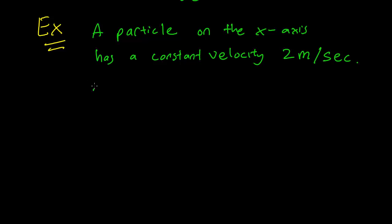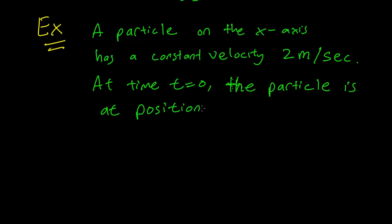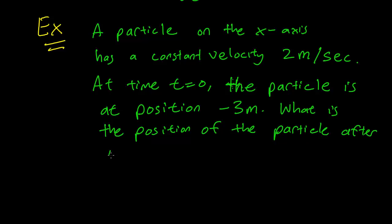At time t equals 0, the particle is at position minus 3 meters. What is the position of the particle after 5 seconds? In other words, t equals 5.